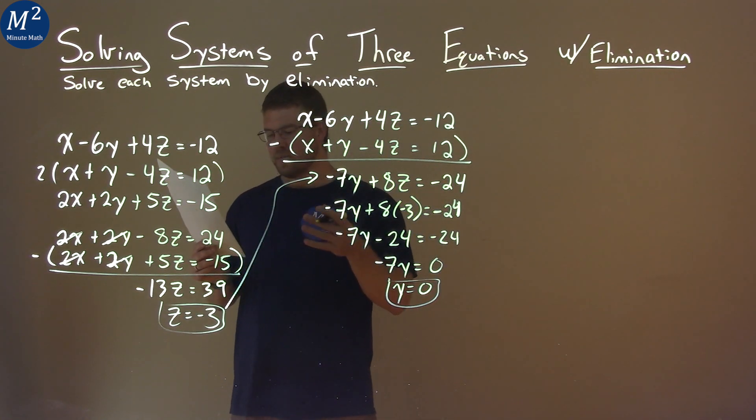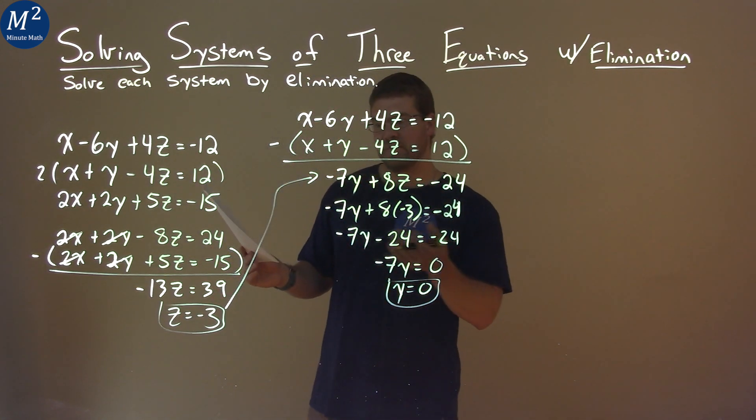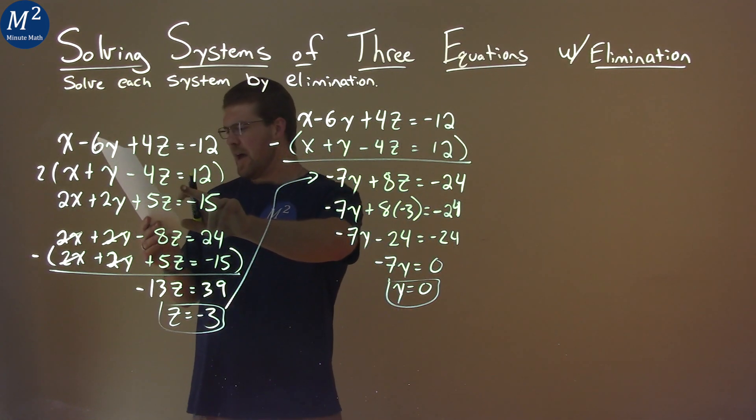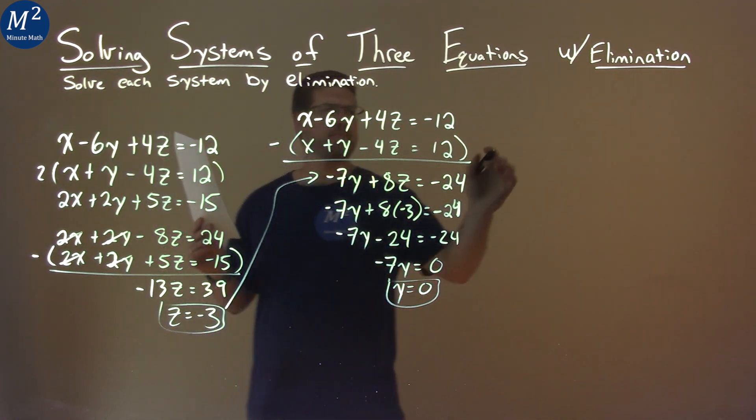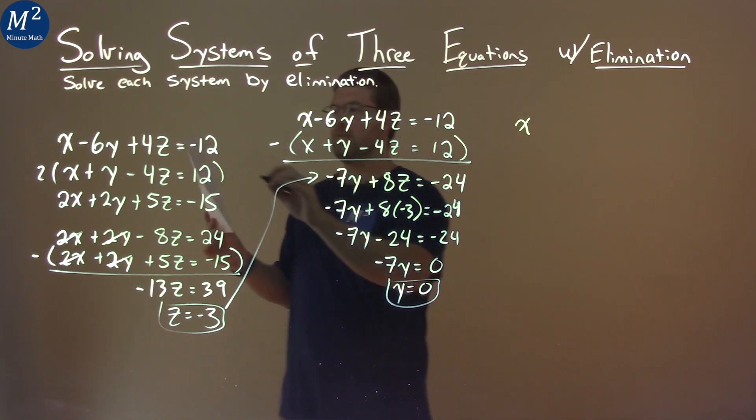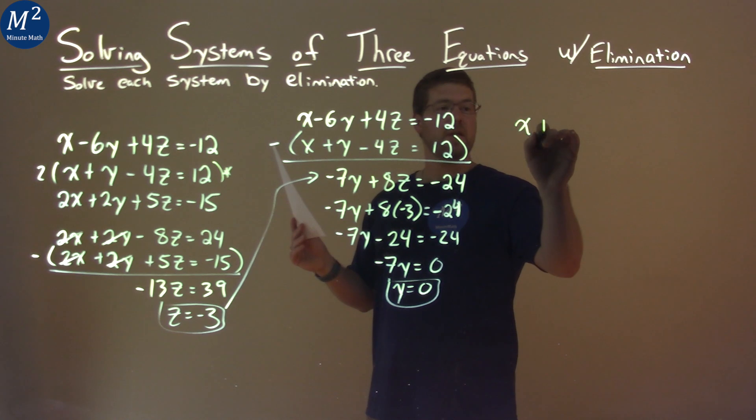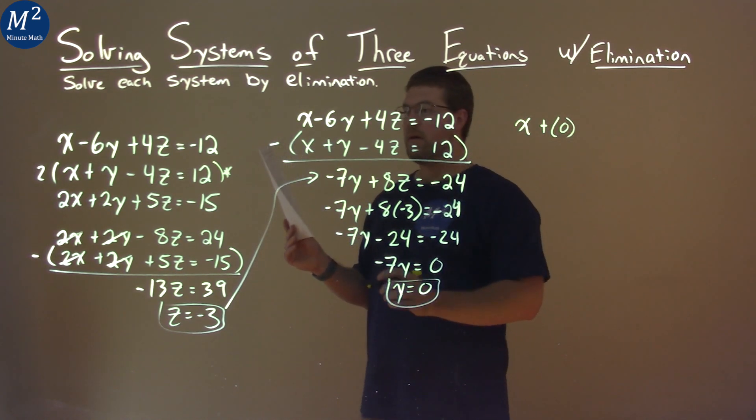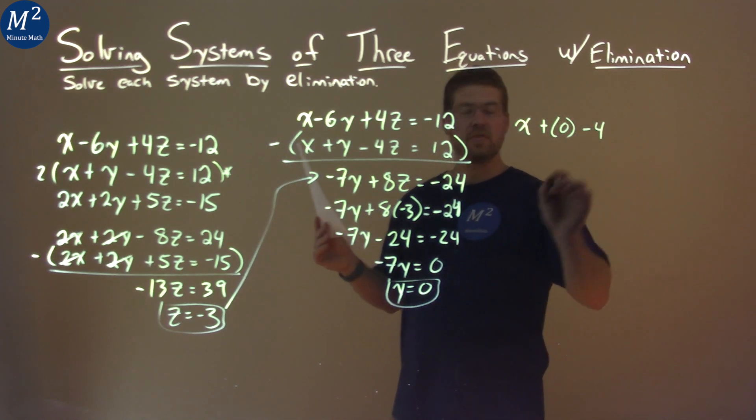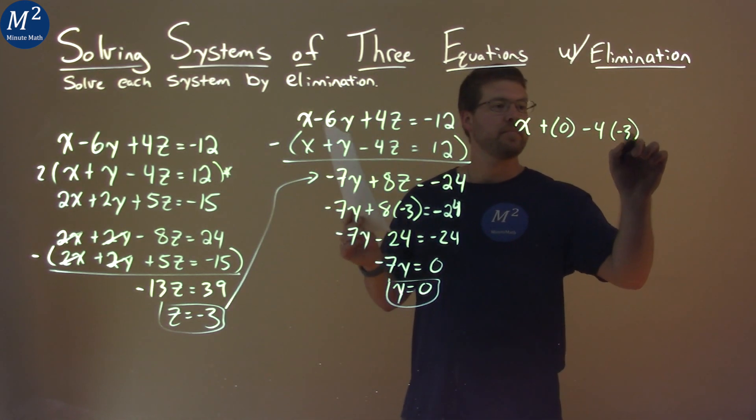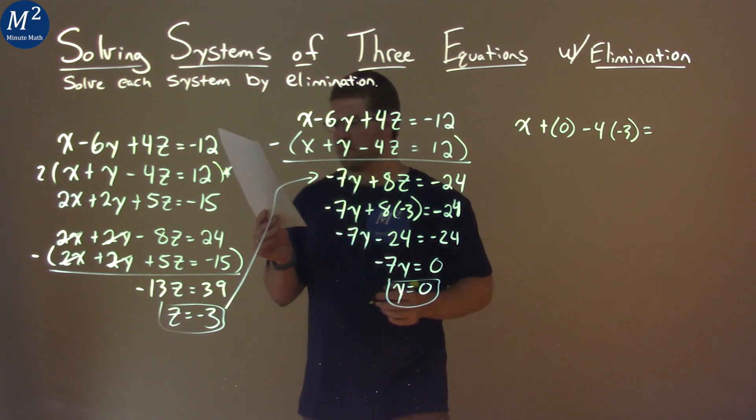Well, we pick one of our equations that we think is going to be easiest and substitute z and y in for the values, in for their variables. And I picked the second equation. So we have x—I'm going to keep using this second equation a lot here. x plus, and instead of y I'm putting a 0 in, minus for z, instead of z we put a negative 3 in, and that's equal to positive 12.